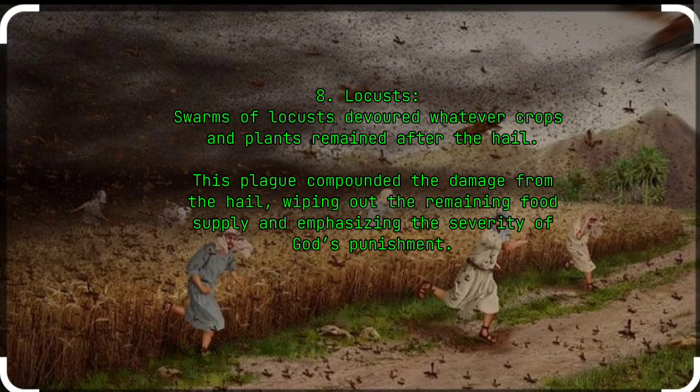8. Locusts. Swarms of locusts devoured whatever crops and plants remained after the hail. This plague compounded the damage from the hail, wiping out the remaining food supply and emphasising the severity of God's punishment.